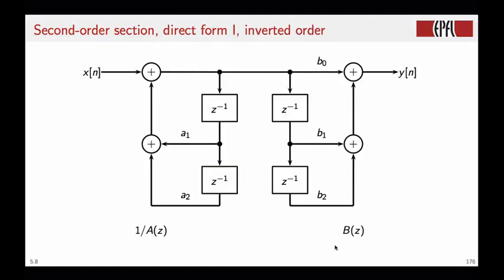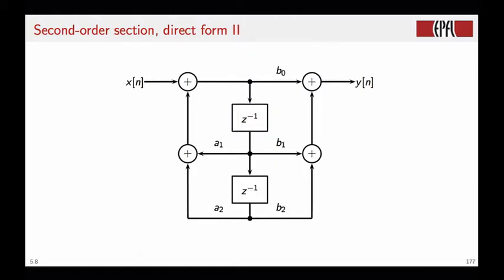So here's the interesting part. Because of the commutativity of the convolution, we can actually invert the order of the two sections. We can put the denominator first, followed by the numerator. So we first filter by 1 over A of Z, and then filter by B of Z. So nothing has changed in terms of the output, but now if you look at the structure, you see that the contents of these delay cells are going to be exactly the same at all time. So whatever goes in here also goes in here. So this is equal to this, and this is equal to this. So we can lump the delay cells together and obtain the second-order section in what is called Direct Form 2, where delays have been lumped together, and so we have a net gain of two memory cells for this type of implementation. So you can see that we have managed to optimize the implementation of the second-order section without necessarily having to write code in any specific programming language.